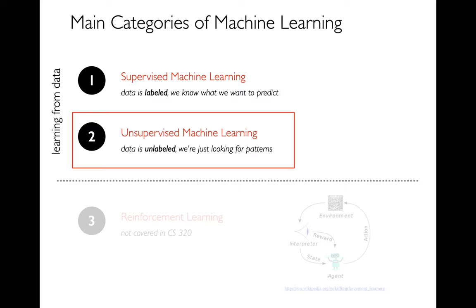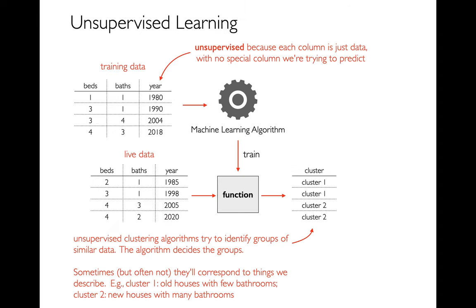Now let's talk about unsupervised machine learning. Here I have my training data and there's no price column anymore — that's why it's unsupervised. I don't have any special labeled column that I'd think of as my Y column. What the algorithm is trying to do is look for patterns — can it see groups of houses that are similar? Then when I feed in new data, it tries to assign each row to one of these groups. It might say something like these two houses are in cluster one and these other two houses are in cluster two.